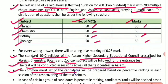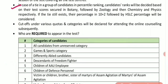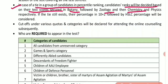A common merit list will be prepared based on percentile ranking across all test centers. In case of a tie, candidates' ranks will be decided based on test scores in Botany, followed by Zoology, then Chemistry and Physics. If the tie still exists, their percentage in 10+2, followed by SSLC percentage, will be considered.